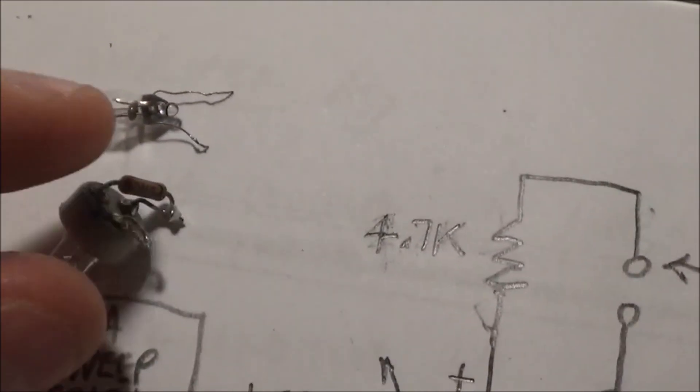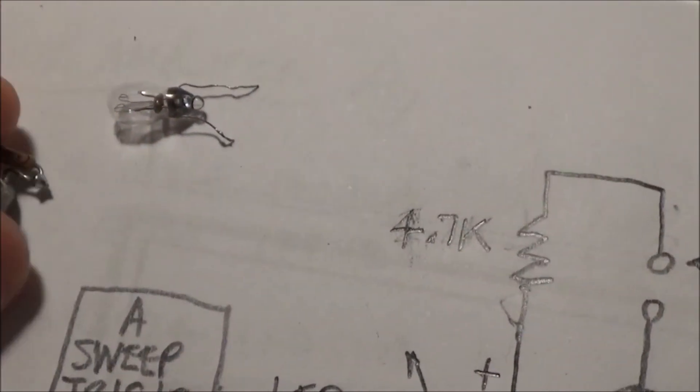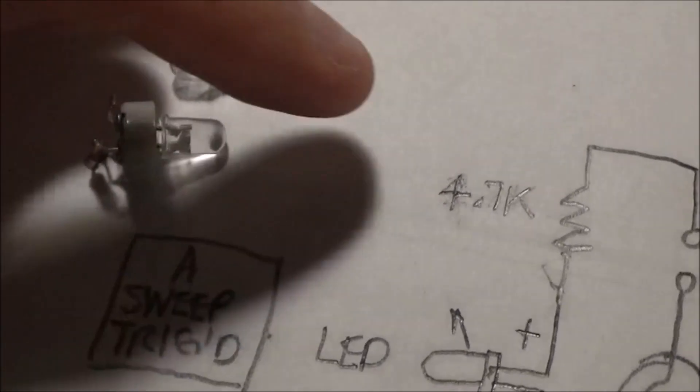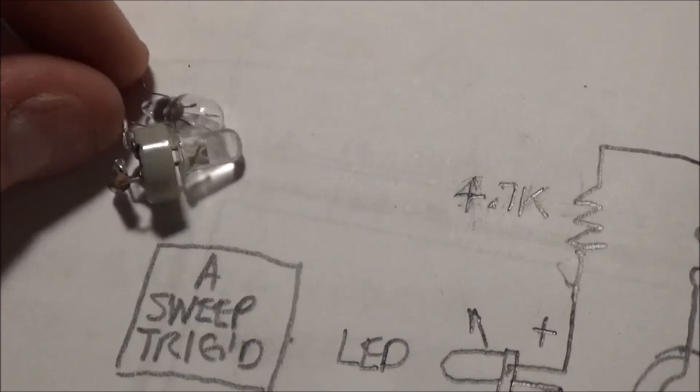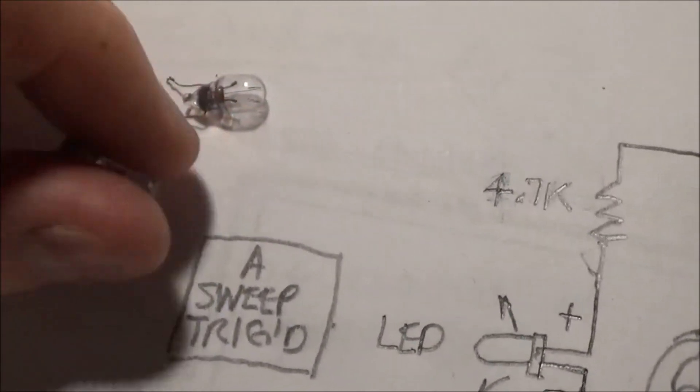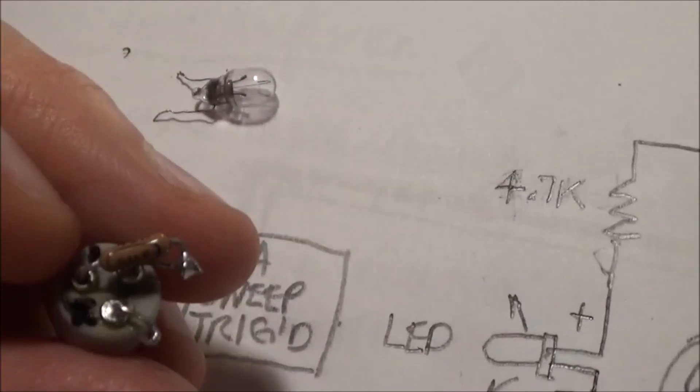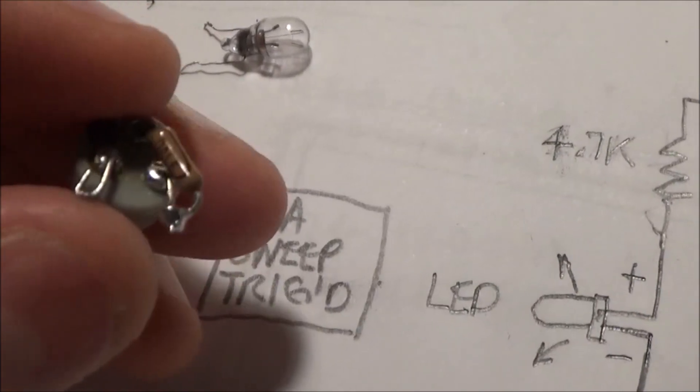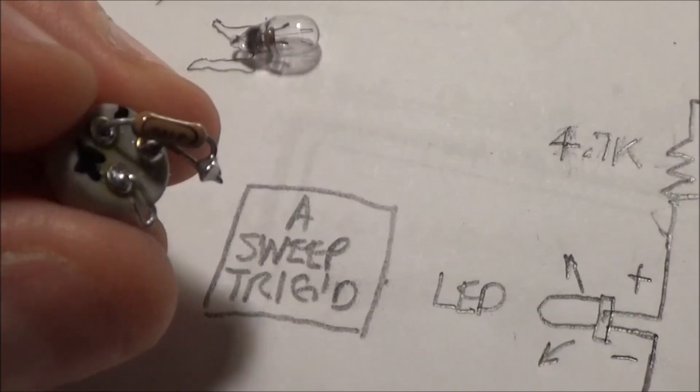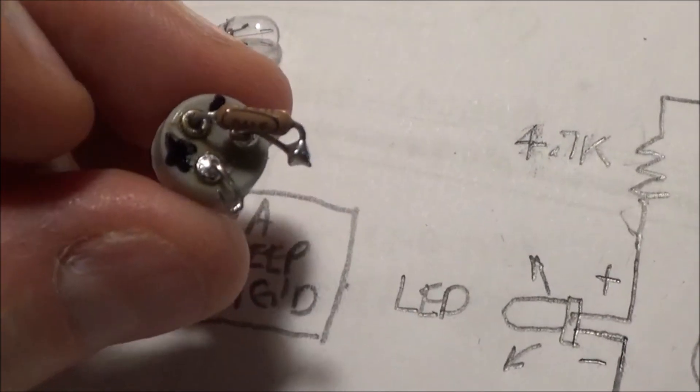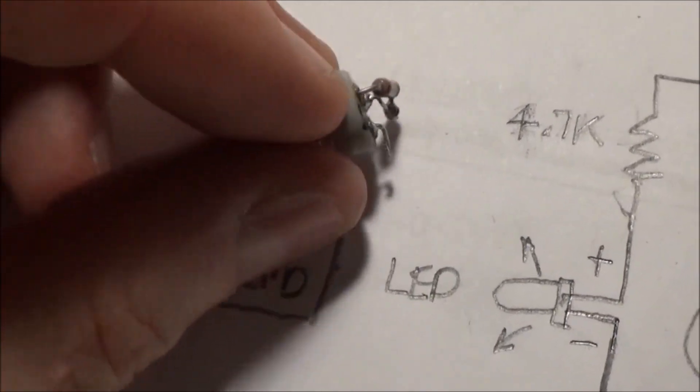And here is the LED in comparison. You can see they're very similar in size. Here I have it wired up so that all I have to do is solder those two wires to here and this little hole right here at the end of this resistor, and snap it back in place and we're good to go.